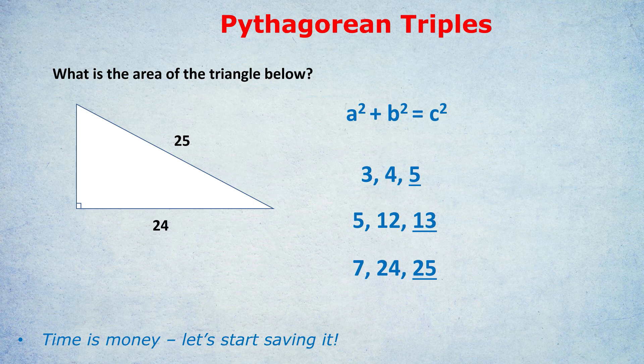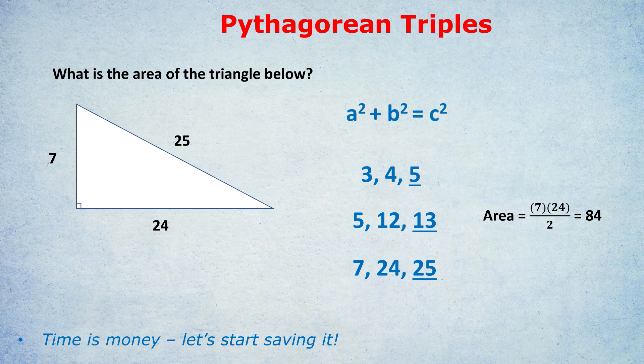Take the triangle on the left — the question is: what is the area of the triangle below? To find the area, we need to find the side on the left, which will be the height of the triangle. We can see that 25 and 24 are two of the sides of our third Pythagorean triple, 7-24-25, meaning the missing side has to be 7. If that side is 7, the area is 7 times 24 divided by 2. 24 divided by 2 is 12, and 7 times 12 is 84.